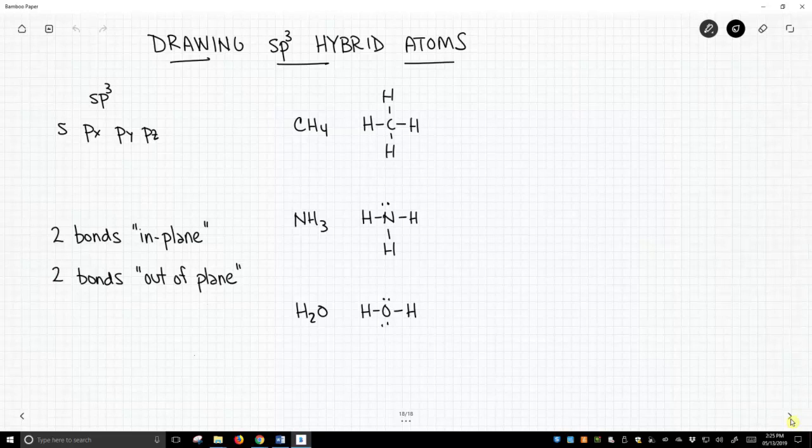In the upper left we've written sp3 and remember to get sp3 hybridization we're going to take all four of our valence atomic orbitals in carbon: the s, the px, the py, the pz, and we're going to combine them to get four sp3 hybrids.